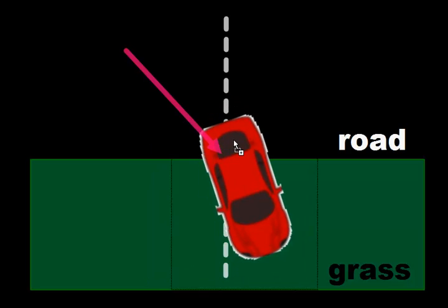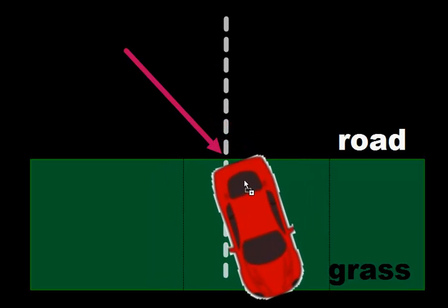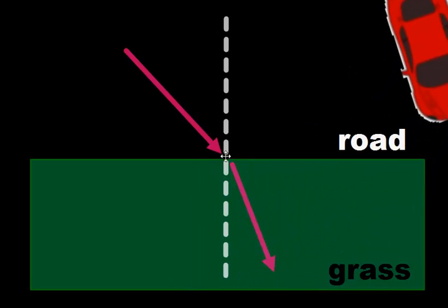The same thing happens with the back tire, so by the time the car is fully in the grass it's traveling in a new direction — turned inward toward the dashed line called the normal. Going from fast to slow, the car turns towards the normal because the angle it makes with the normal is now less than before.